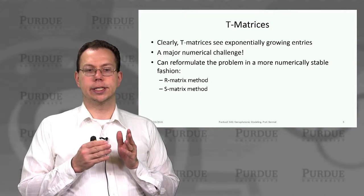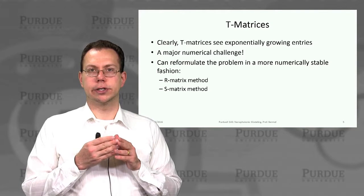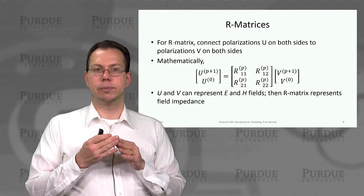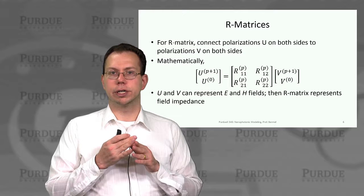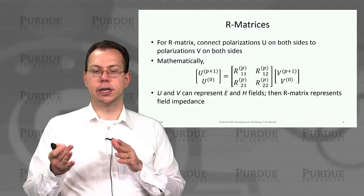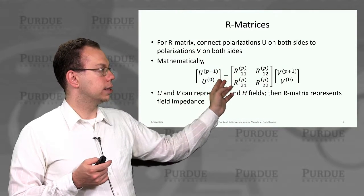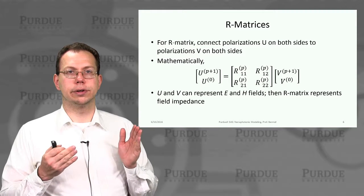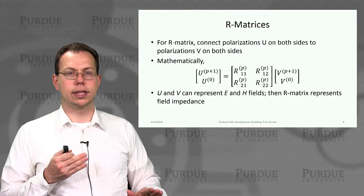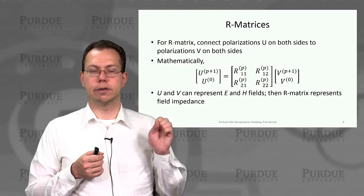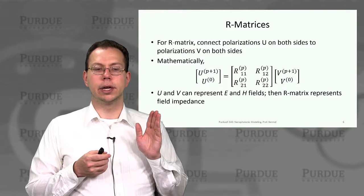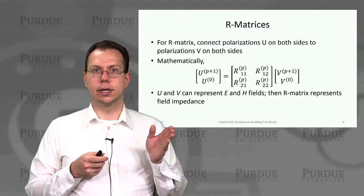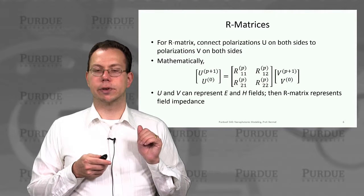Now there are two ways that you can try to address this in order to be more numerically stable. The first being the R matrix method, and then the second being the S matrix method. Just to briefly go over the R matrix method, here you would basically formulate the problem so that you would have certain polarization U that's connected to certain polarization V on the other side. And so here you would actually write that U polarization would depend on the R matrix times the V polarization. And you can see there are two different components to both polarizations. One is on the top of the stack, and then the other is on the bottom. So that's basically U0 versus UP plus 1, and then of course V0 and V plus 1. And so oftentimes the U and V would represent E and H fields. So for example like the TM and TE fields respectively. And then the R matrix would represent the field impedance.